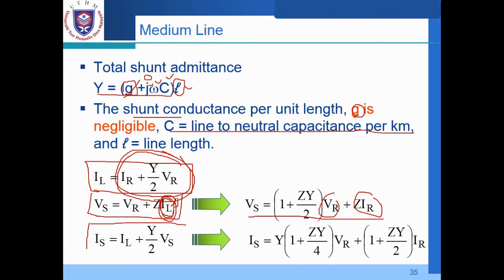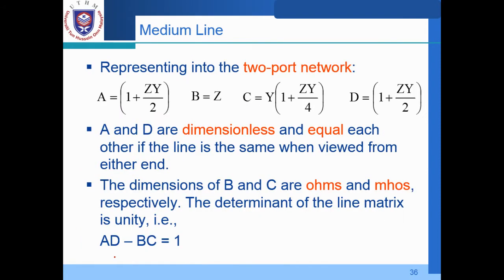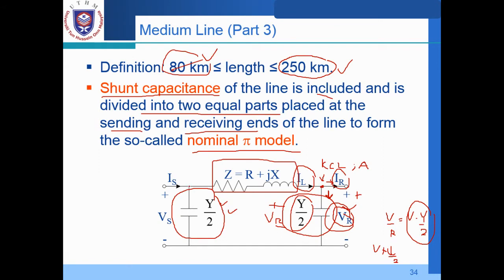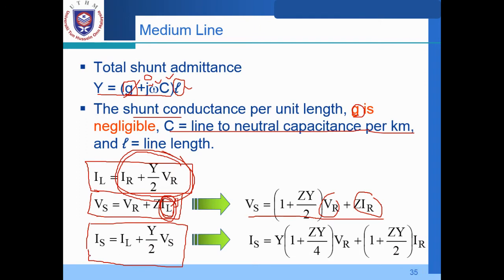So similarly, this is for IS, sending current. Here at this point, let's say we have a point on node B. So we try to apply KCL at point B. So we have this current downward, which is equal to VS multiplied by Y over 2, the inversion of R or ohms. This is Y over 2. And then this current to the right is IL.